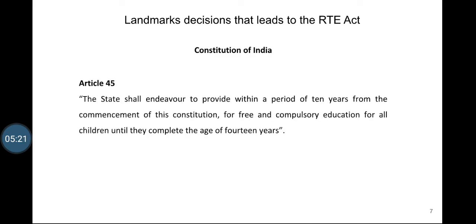Article 45 says that the state shall endeavor to provide, within a period of 10 years from the commencement of this constitution, free and compulsory education for all children until they complete the age of 14 years. So they gave a 10-year timeframe to achieve this goal, meaning the Indian government should have achieved this by 1960.